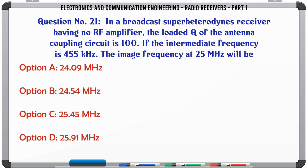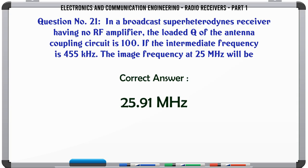In a broadcast superheterodyne receiver having no RF amplifier, the loaded Q of the antenna coupling circuit is 100. If the intermediate frequency is 455 kHz, the image frequency at 25 MHz will be: A. 24.09 MHz. B. 24.54 MHz. C. 25.45 MHz. D. 25.91 MHz.